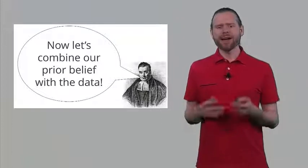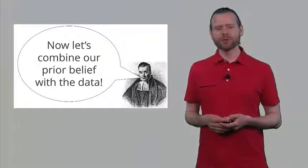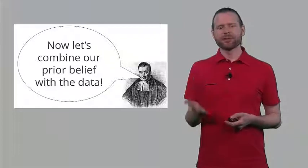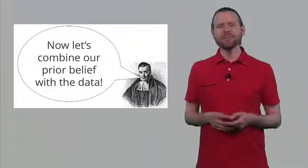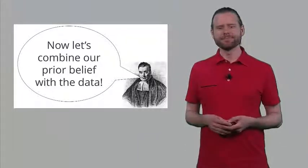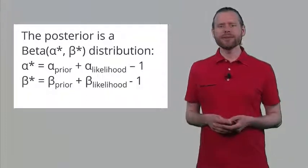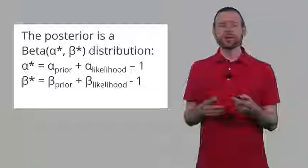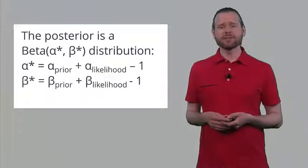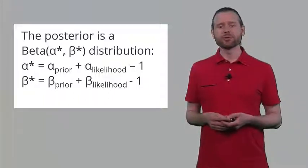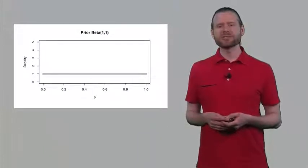Now let's combine our prior belief with the data we have observed. We have a beta prior distribution and a likelihood function, and we can quite easily combine these into a posterior distribution. The posterior is also a beta distribution with an alpha and beta value. The alpha and beta are determined simply by adding the alpha of the prior to the alpha of the likelihood function minus 1, and the same is true for beta: the beta of the prior added to the beta of the likelihood distribution minus 1.